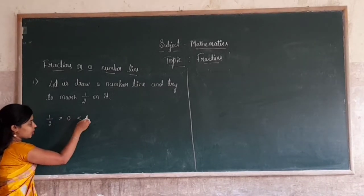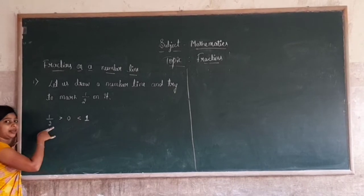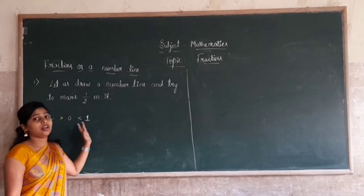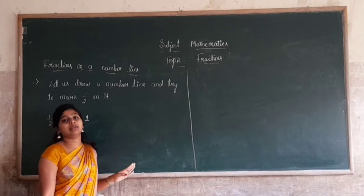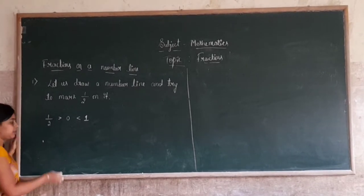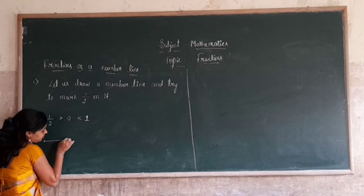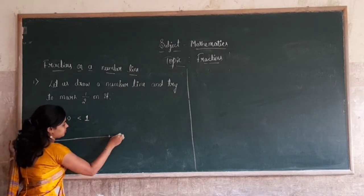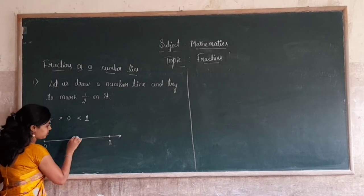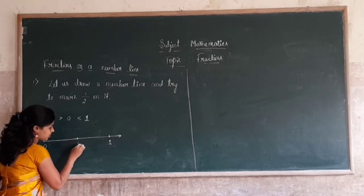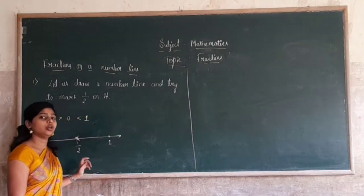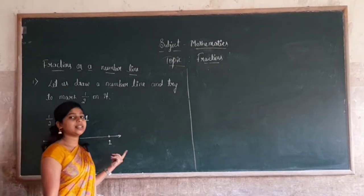So 1 by 2 is greater than 0 and less than 1. We have to divide the gap between 0 and 1 into 2 equal parts and mark 1 part as 1 by 2.